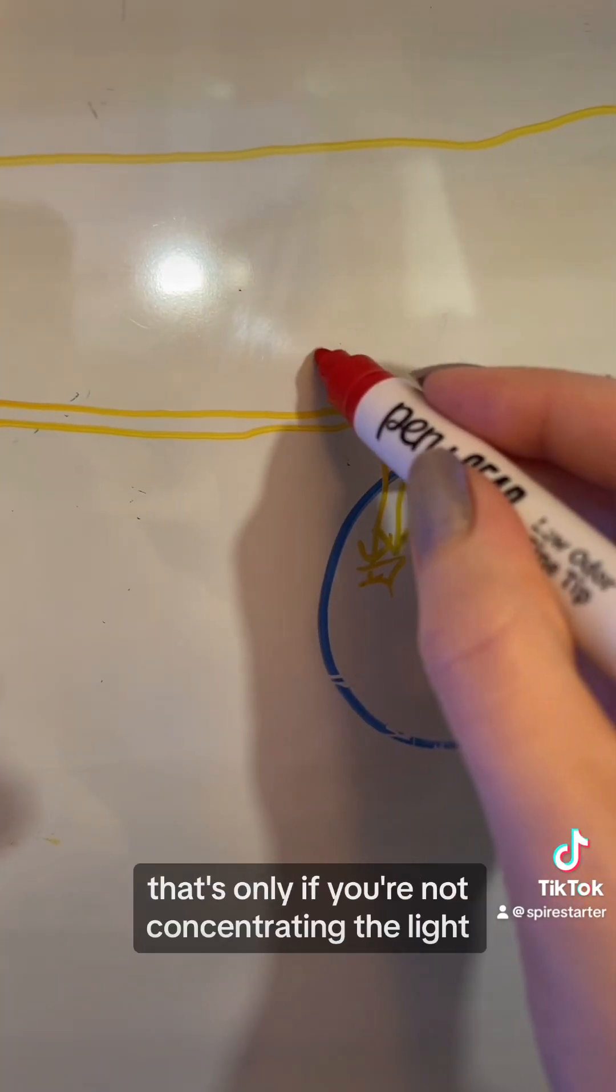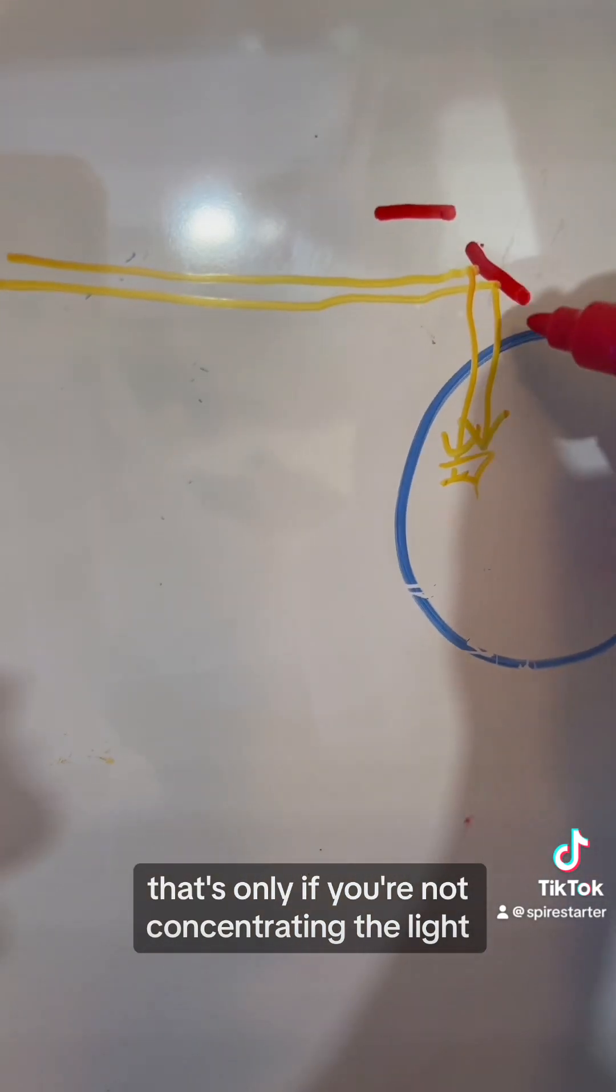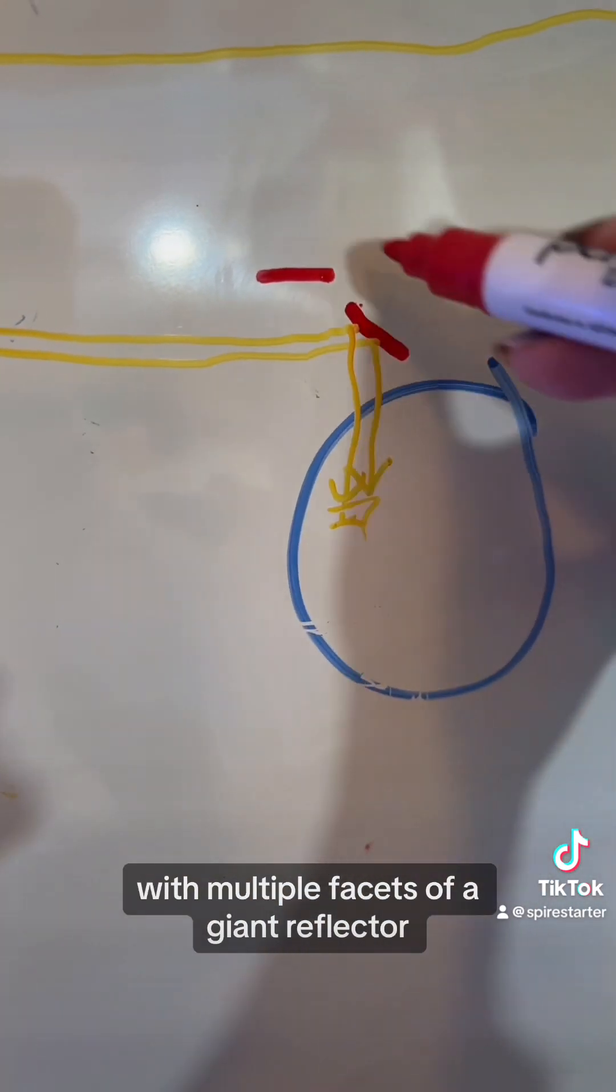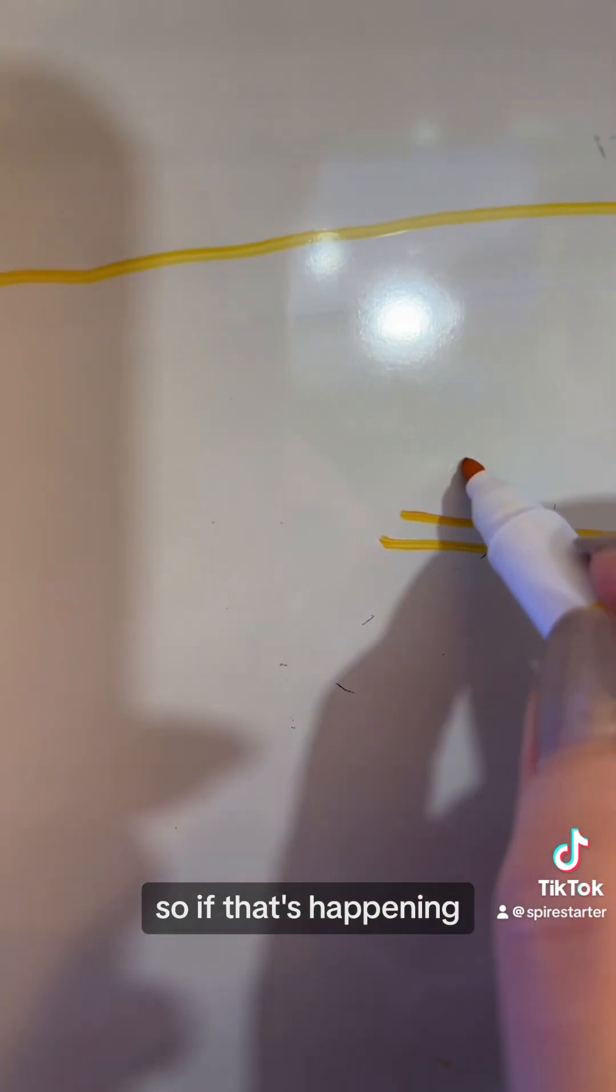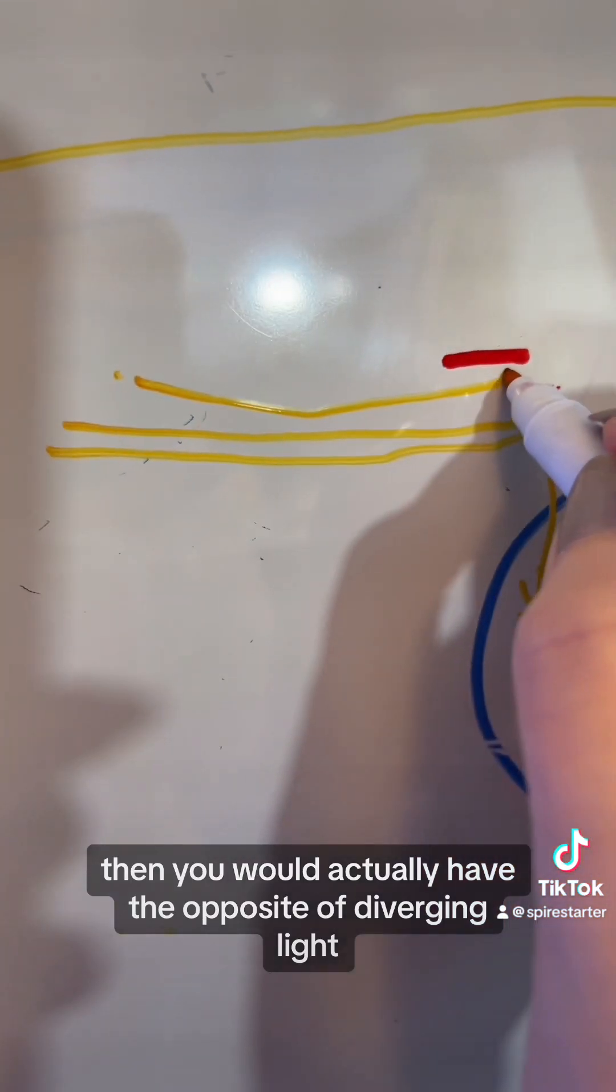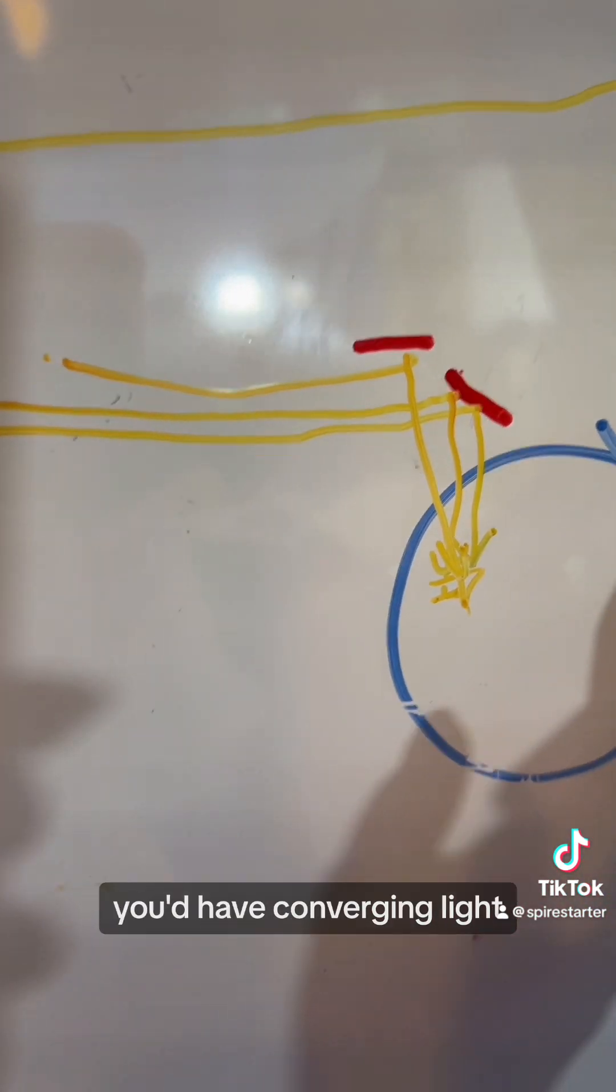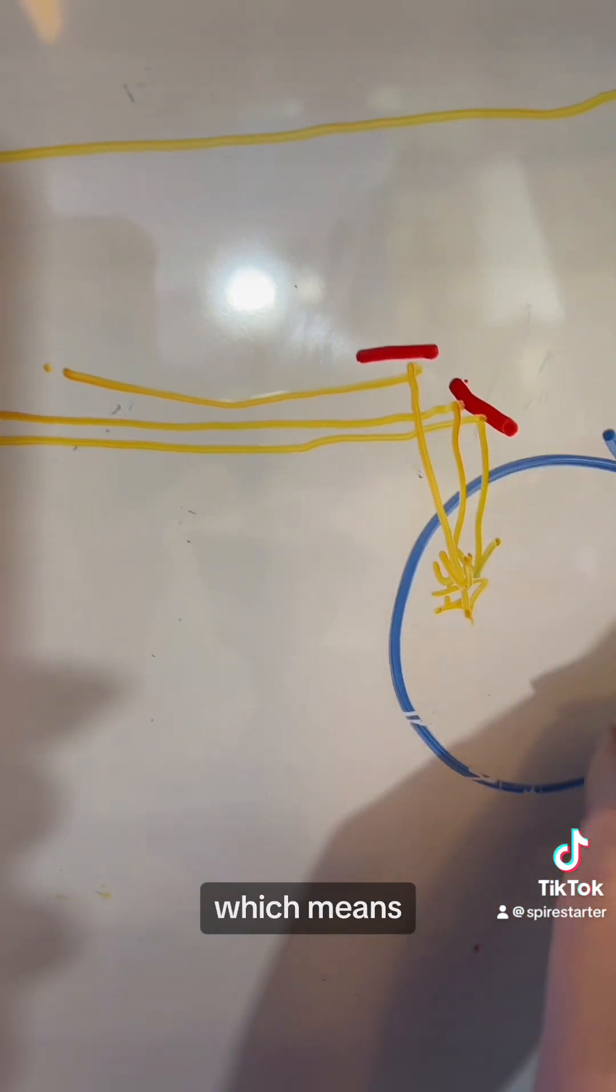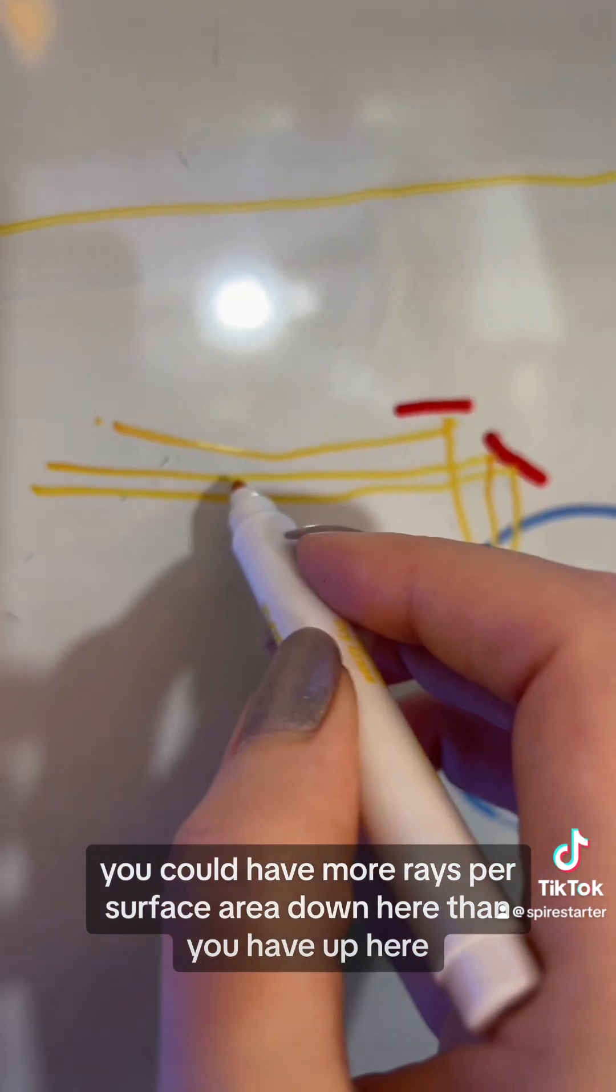Another thing to keep in mind is that's only if you're not concentrating the light with multiple facets of a giant reflector, which is kind of what they're doing. So if that's happening, then you would actually have the opposite of diverging light. You'd have converging light, which means you could have more rays per surface area down here than you have up here.